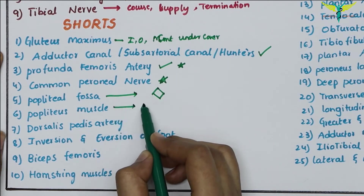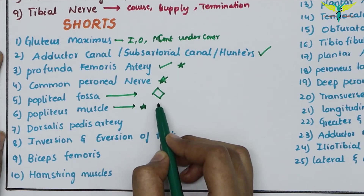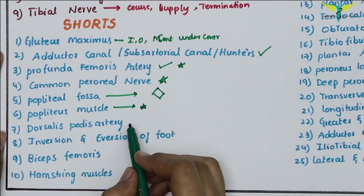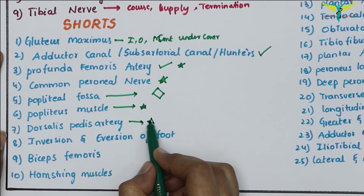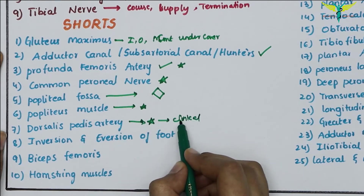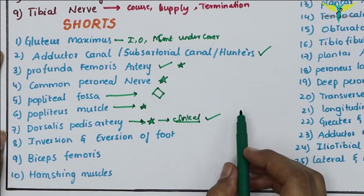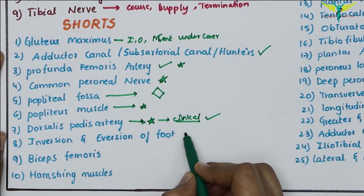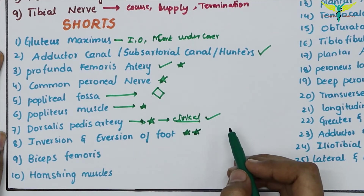The dorsalis pedis artery is very important, and its clinical aspect — knowing the pulse — is important. The inversion and eversion of the foot is very very important, similar to supination and pronation of the upper limb.